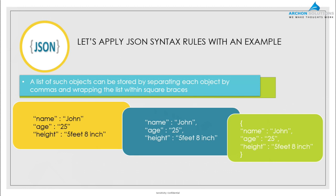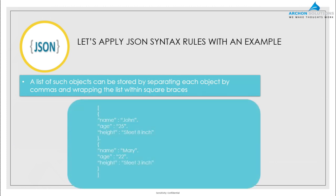Suppose we want to pass details of multiple persons from one source to another. We have two objects — one for John and one for Mary. For both, we are passing name-value pairs for name, age, and height. Each object is wrapped in its own curly braces, the objects are separated by commas, and the whole thing is wrapped in square brackets — showing it is a list of person objects. This is how we apply JSON syntax rules to communicate between two applications.